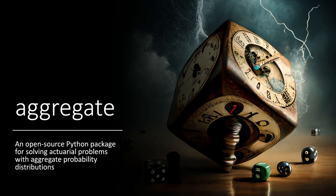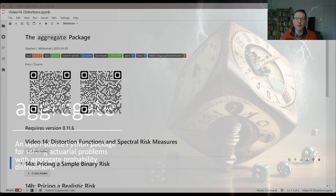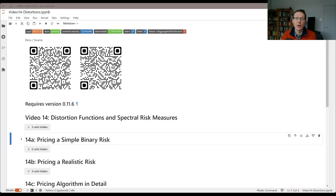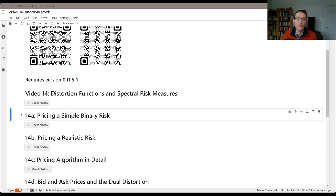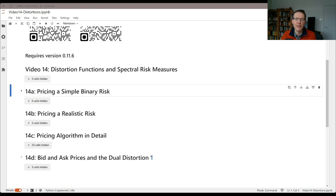Welcome to Aggregate, an open source Python package for solving actuarial problems with aggregate probability distributions. In today's session we're going to continue our discussion of distortion functions and spectral risk measures, and we're going to talk about the idea of a bid price and an ask price for a contract.